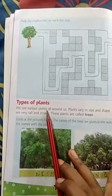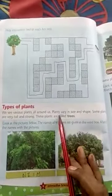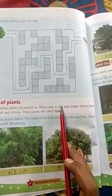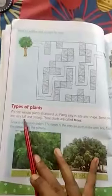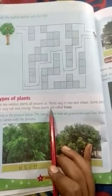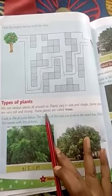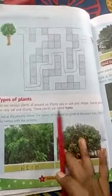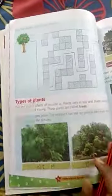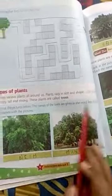We see various plants all around us. Some plants are very tall and strong. These plants are called trees. Look at the picture below — the names of the trees are given in the word box: Neem, Mango, Banyan, Coconut.